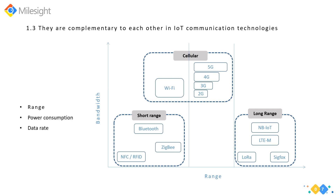Based on the intended functionality of your product, it should be relatively simple to determine which group of technologies you need to consider. For example, if you require two devices separated by about 10 meters to transfer low amounts of data, then it doesn't make sense to use any of the long-distance or high-speed wireless technologies.